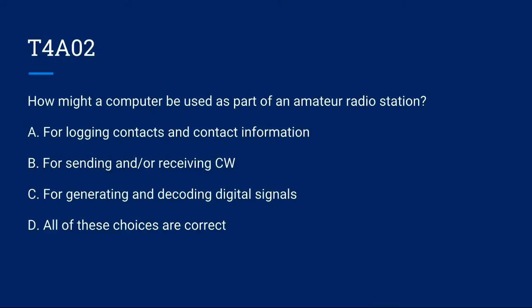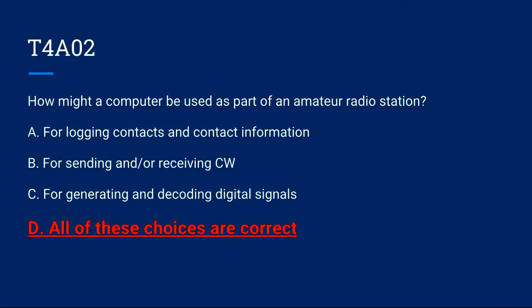T4A-02: How might a computer be used as part of an amateur radio station? A. For logging contacts and contact information. B. For sending or receiving CW. C. For generating and decoding digital signals. D. All of these choices are correct. The correct answer is D. All of these choices are correct.